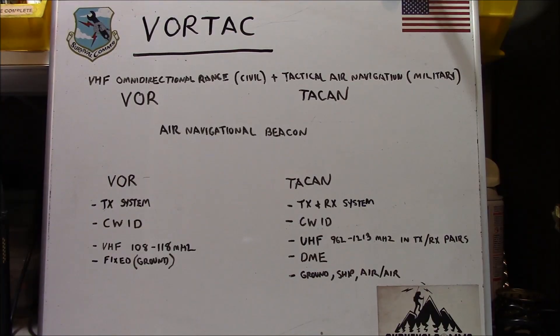Some of you may be wondering, what is a VORTAC? Well, a VORTAC is essentially the co-location of two different types of air navigational beacons, one VHF and one UHF. The VHF operating in the civil aviation band, and that is known as a VHF omnidirectional range beacon. And then the military side of the house operating in UHF is called a TACAN, which is a tactical air navigation beacon.